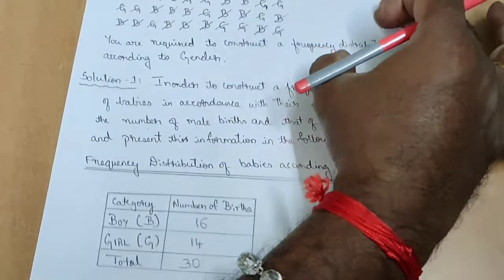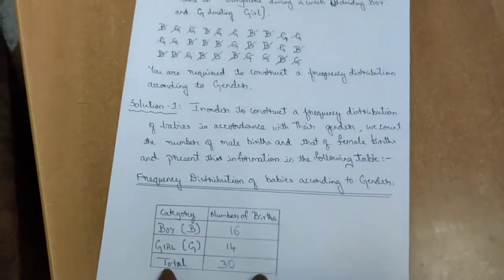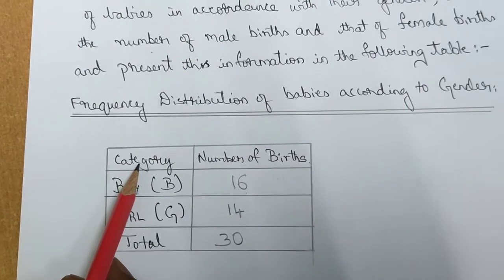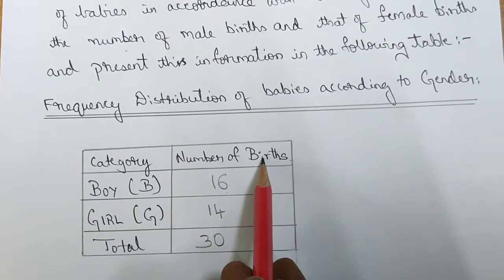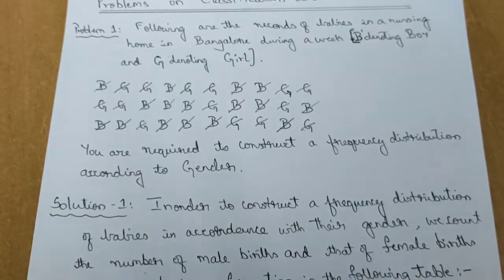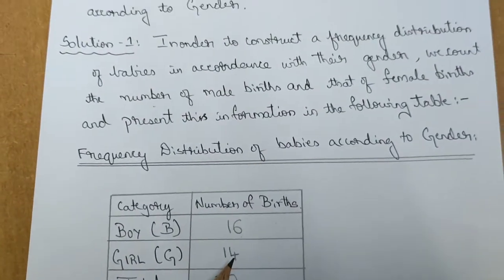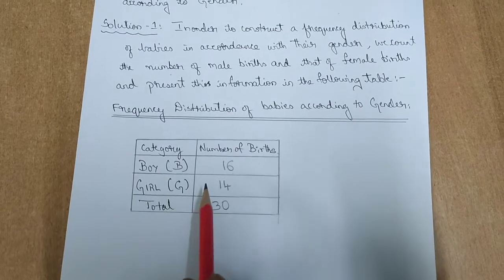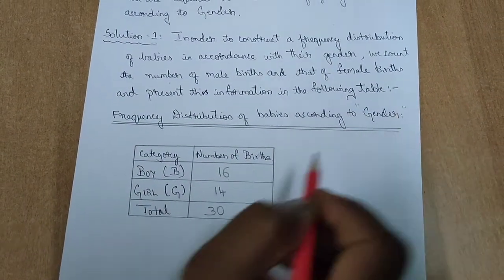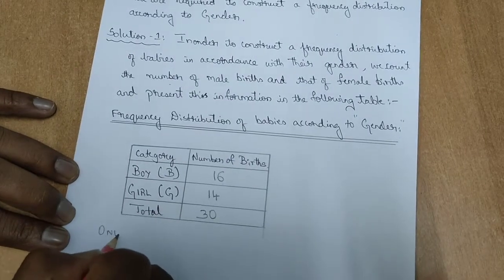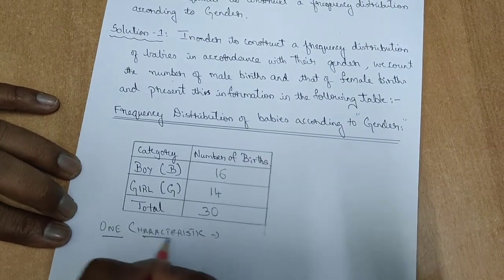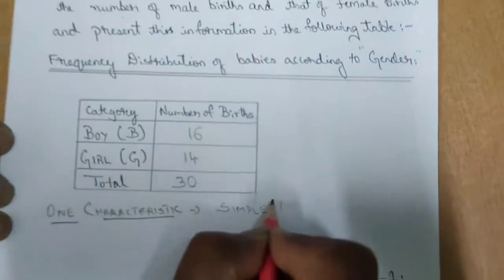This entire paragraph can be presented in a simple table of 2 to 3 to 4 lines. This is the category which indicates the gender of the children born — boy, girl — and this is the number of births in that nursing home during a particular week. This is how complex data like this can be simply presented in the form of a table. The classification of the table is done on the basis of only one characteristic — gender — so this table can be called a simple table.